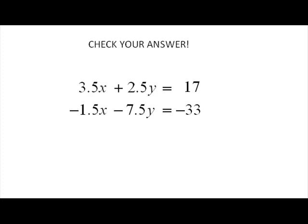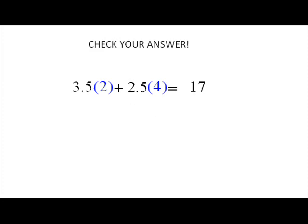I'm going to replace the x and the y with the values I have found. This gives me 3.5 times 2 plus 2.5 times 4 is equal to 17. That gives me 10 plus 7 is equal to 17. Now here's the moment of magic. You should get the same number on the left side as the number on the right side.